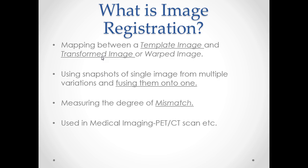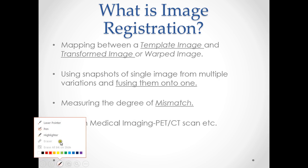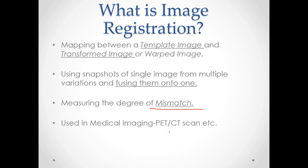Why is image registration useful? For example, if you take a photograph of the same object from different camera angles and different light exposures, you see by the naked eye that the object is exactly the same. But when you put the snapshots into a computer and try to fuse them or find the difference, you will find a mismatch. This mismatch occurs because the computer doesn't see the two images as the same. Our objective is to minimize this mismatch as much as possible. Image registration is widely used in medical imaging, for example PET and CT scans.